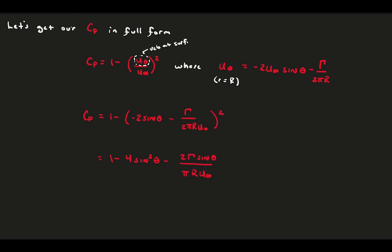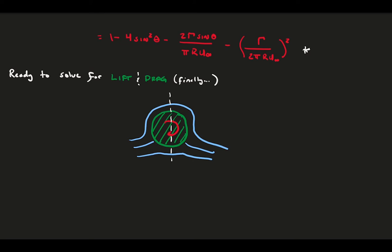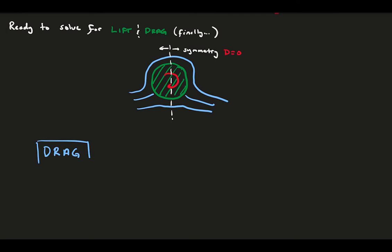We can expand our squared parentheses and get it a bit easier to work with for the upcoming integration. And now we're ready to calculate the lift and drag force for our flow, finally. And just in case we forgot what it looks like, let's sketch the flow again here. We notice at the beginning of the lecture that because we have symmetry about the vertical axis, we expect that there is no drag in the flow. Let's check that.